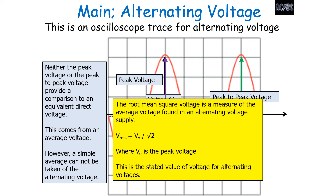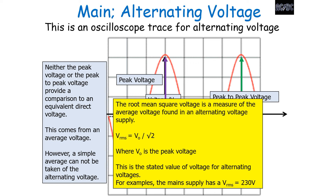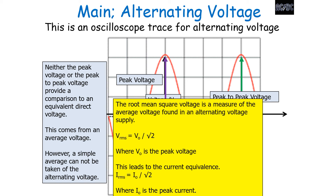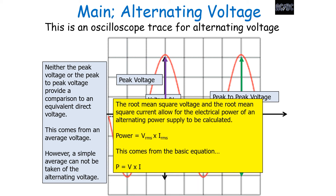The V_rms is also the stated value of voltage for alternating voltages. For example, the mains potential difference of 230 volts is actually the root mean square voltage of the alternating mains supply. The current equivalence is I_rms = I₀ / √2, where I₀ is the peak current. The root mean square voltage and current allow the electrical power of an alternating supply to be calculated using P = V_rms × I_rms, which comes from the basic equation P = VI but using average values. This equation is not given in your examination.